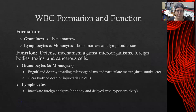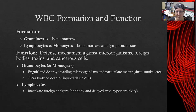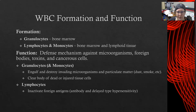Regarding WBC formation and function: granulocytes are all formed in the bone marrow and released into the circulation. Lymphocytes and monocytes are also formed in the bone marrow and released into the circulation, but many home to lymphoid tissue where they spend a great deal of time filtering the lymphatic fluid. The function of white cells is as a defense mechanism against microorganisms, foreign bodies, toxins, and cancerous cells.